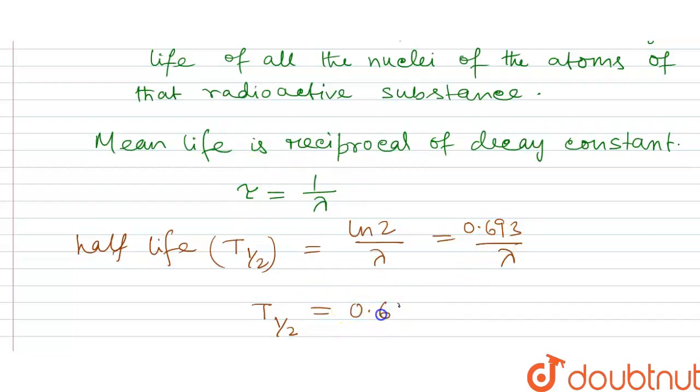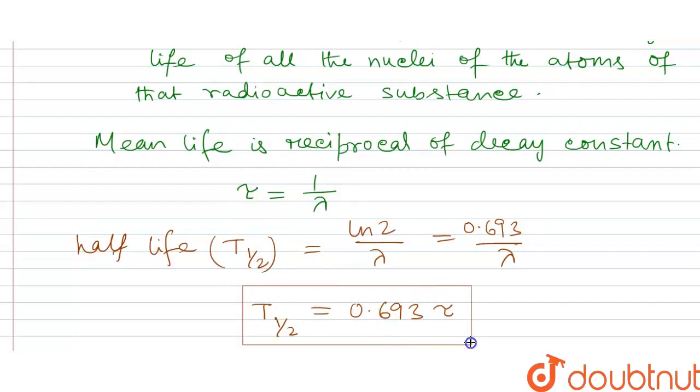The half-life equals to 0.693 into tau. So this is the relation of half-life and mean life.